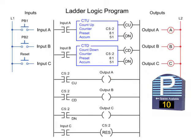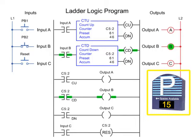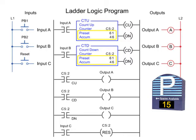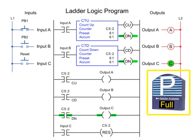Cars exit the garage by pressing PB2 to open the gate. The CTD instruction is decremented by one, and the visual display is updated. With both the up and down counters addressed to the same counter file, the preset and accumulated values are the same. When the accumulated value reaches the preset value, the Counter Done bit enables output C, and Full is displayed.